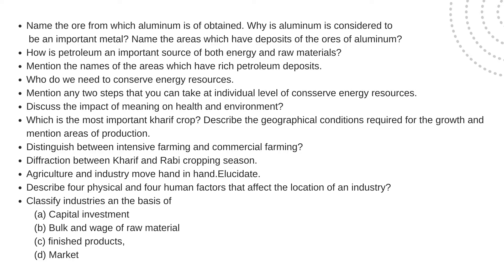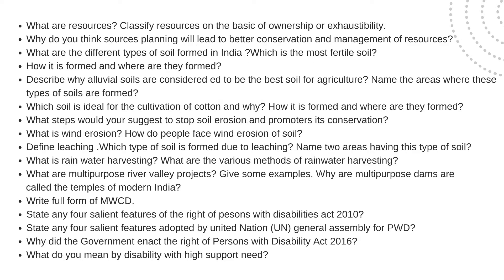Distinguish between intensive farming and commercial farming. Differentiate between the Kharif and Rabi cropping seasons. Agriculture and industry move hand in hand — elucidate. Describe four physical and four human factors that affect the location of an industry. Classify industry on the basis of capital investment, bulk and waste of raw material, finished product, and market. What are resources?